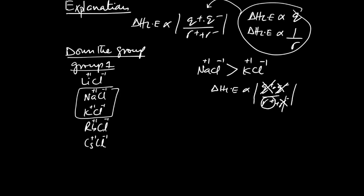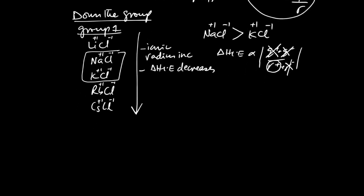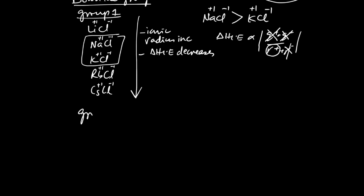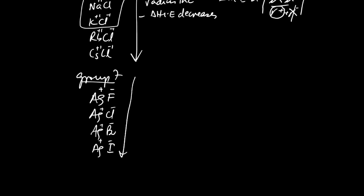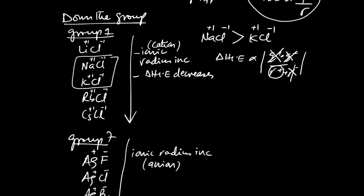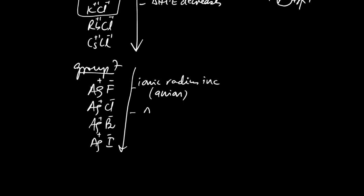So when you move down the group, ionic radius increases and lattice enthalpy decreases. I wrote 'ionic radius' generally — not just cationic — because if we look at Group 7 compounds like AgF, AgCl, AgBr, AgI, all are +1/−1. The size of the cation (Ag⁺) is the same throughout, but the size of the anion increases down the group. So ionic radius increases and lattice enthalpy decreases. The fact remains the same: down the group, enthalpy of lattice energy decreases.